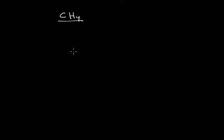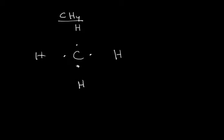Another example is methane. The central carbon atom has four electrons in its outermost shell and it is surrounded by four hydrogen atoms. The four hydrogen atoms each have one electron in their outermost shell, denoted by a cross. An electron pair between carbon and hydrogen is formed like that.